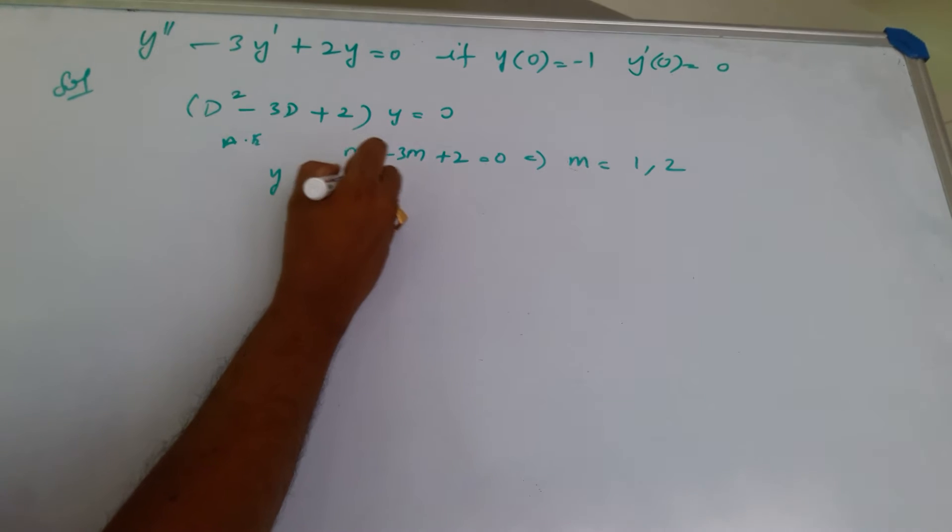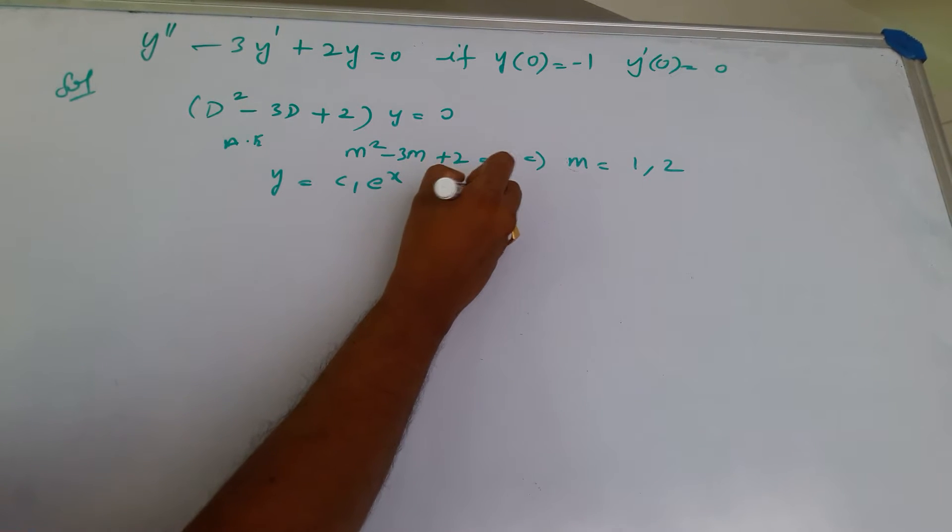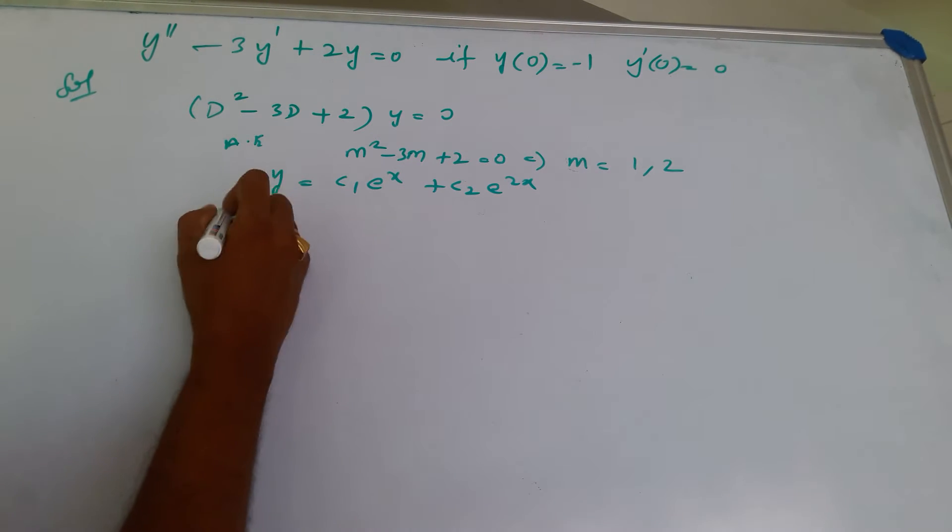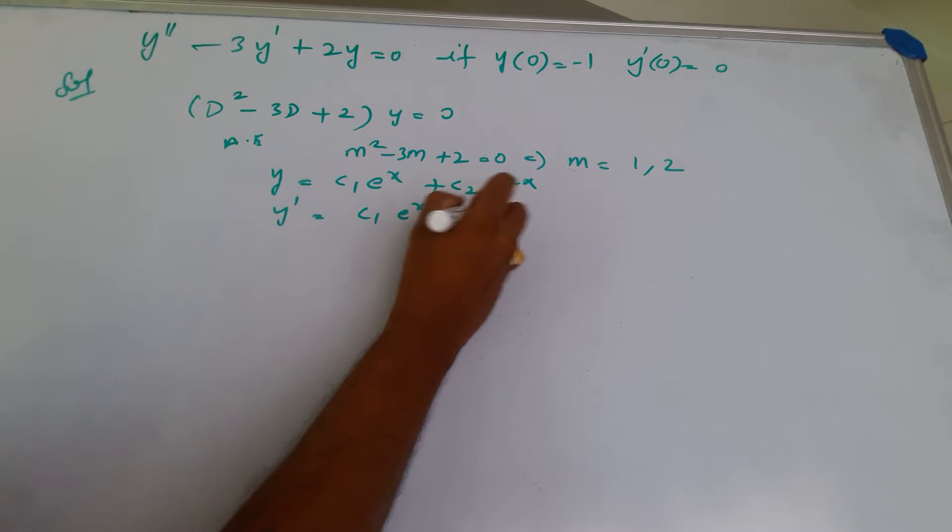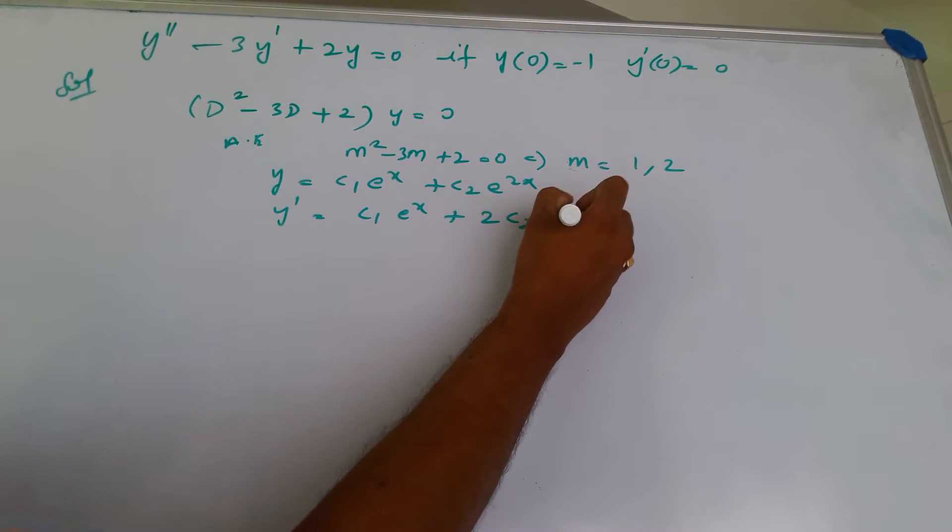You get y equals c1 e to the power of x, c2 e to the power of 2x. Now let us find what is y dash: c1 e to the power of x and 2 c2 e to the power of 2x.